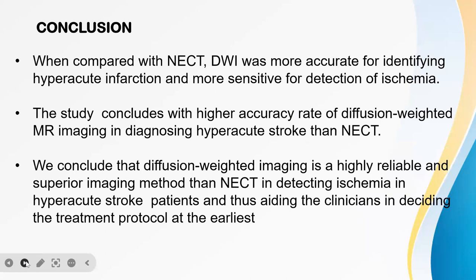In conclusion, when compared with non-enhanced CT, DWI was more accurate for identifying hyperacute infarction and more sensitive for detection of ischemia. This study concludes with a higher accuracy rate of Diffusion-Weighted MR Imaging in diagnosing hyperacute stroke than non-enhanced CT.